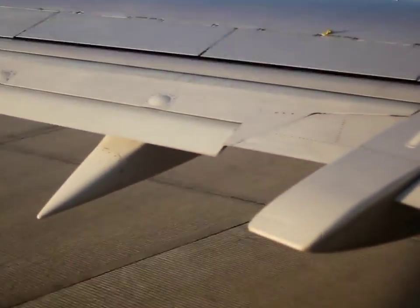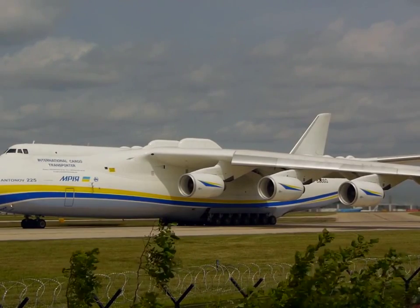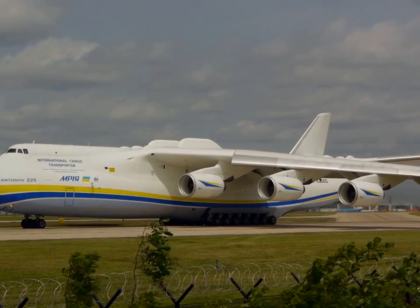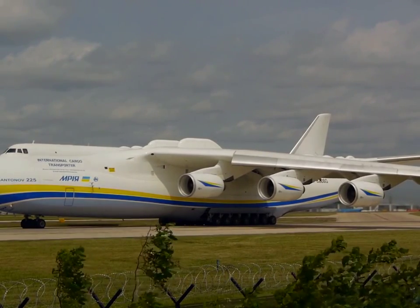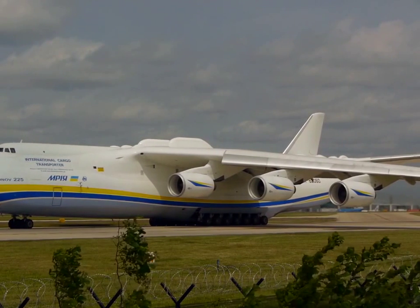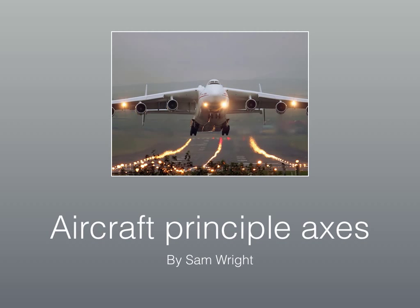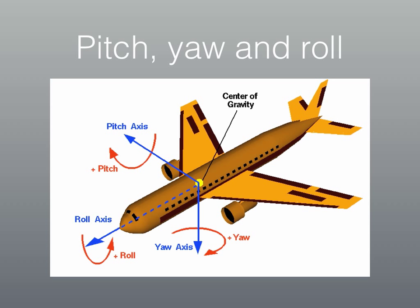But how do these aircraft, sometimes carrying over 250,000 kilograms, manage to take off, stay in the air, and then land all at the pilot's control? The aircraft principal axes are fully responsible for this, with pitch, yaw, and roll all contributing to the direction and movement of an aircraft.